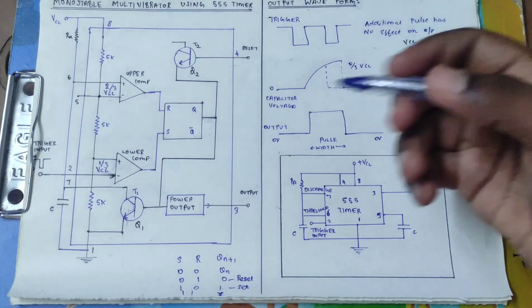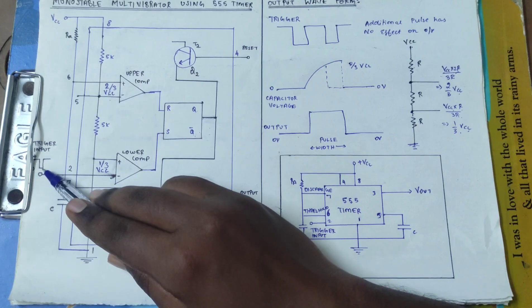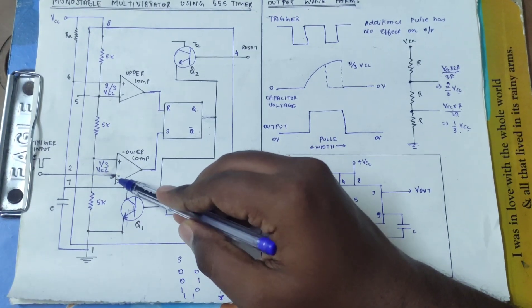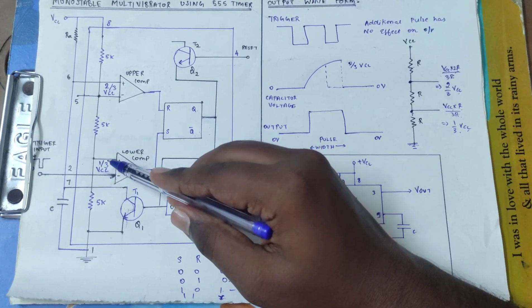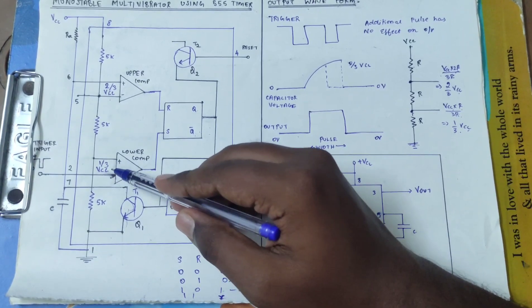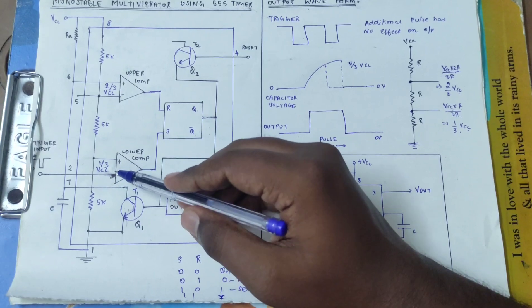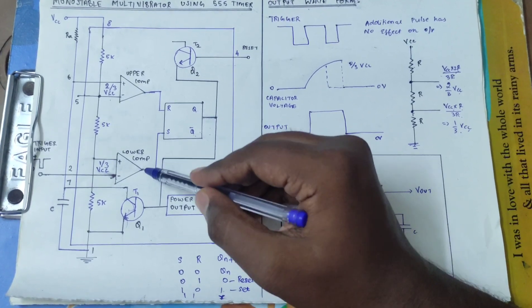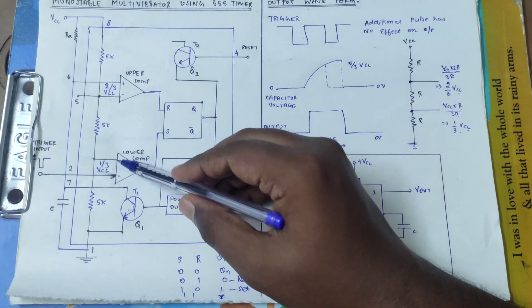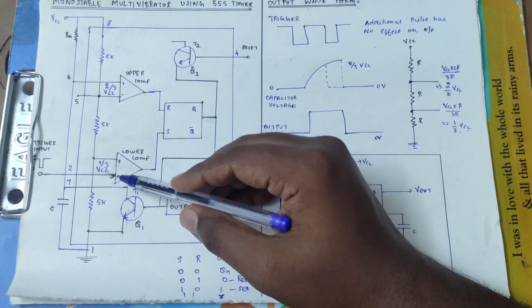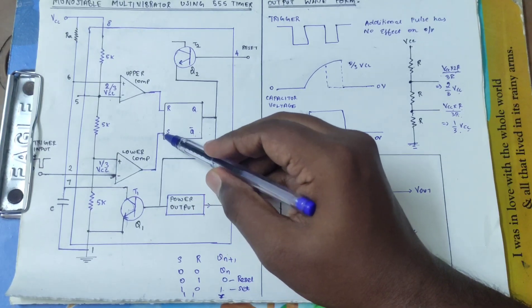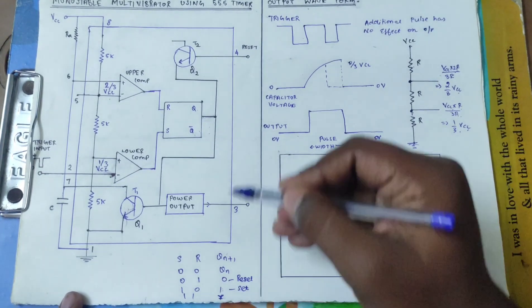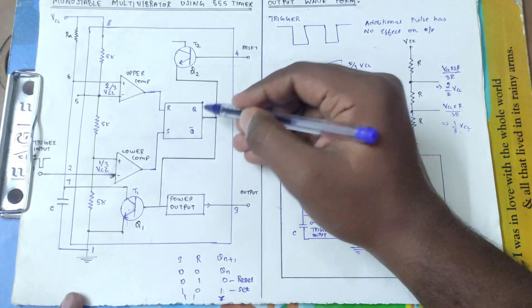Now we have a trigger input — that is a negative pulse. The trigger input goes below 1/3 Vcc. So the trigger input equals 1/3 Vcc, and the output becomes 1. So now S is 1. If S is 1, we get the output as 1. So Q is 1, and Q bar will be 0.